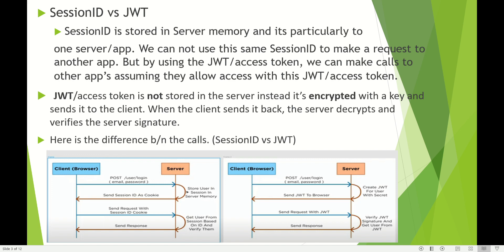When the client sends the token back, the server decrypts and verifies it to make sure this is the token that was sent to the client. We are not storing the JWT in the server; the client can use it for all other servers as well, as long as they use the same token decryption to validate it. In the JWT flow: the request comes in with username and password, the server creates the JWT token, sends it back to the browser, and the browser sends the JWT in the header for future requests. The server decrypts and verifies it, and if correct, responds back.